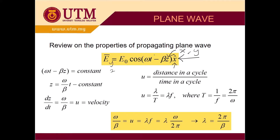Analyzing the expression further, ωt − βz is always constant, giving z = (ω/β)t minus a constant. Therefore dz/dt equals ω/β, which is the phase velocity — distance divided by time. This can also be expressed as λ divided by T (period), or equivalently λf, since frequency f equals one over the period T.